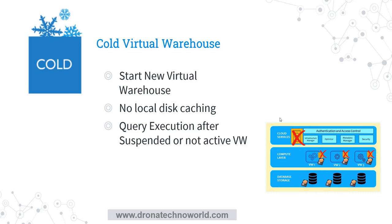...it will first hit the cloud services layer, from there it will go to the compute layer to process the request, and then it will connect to the database storage and pull the data from database storage, and the result will come back through the compute layer to cloud services. In this case, as it is a very first request, it will not be using the cloud services cache or the compute layer cache.